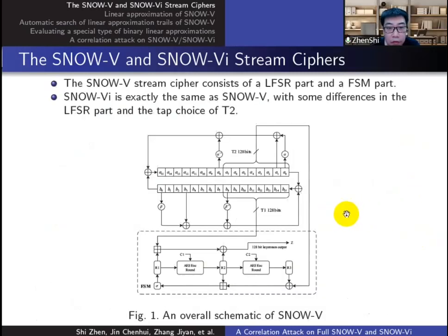This is the framework of SNOW-V. Like most LFSR-based stream ciphers, it consists of an LFSR part and an FSM part. Each type of the LFSR and each memory has a scale of 128 bits. This leads to difficulties to find the approximations for correlation attacks. SNOW-Vi is the same as SNOW-V except the tap T2 is switched to the left half.